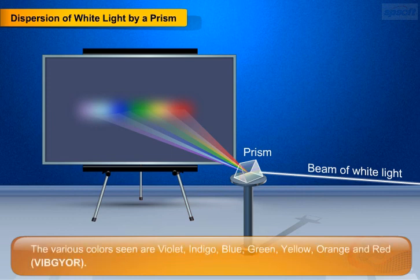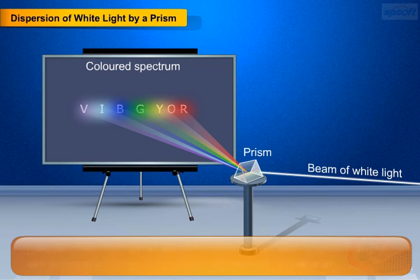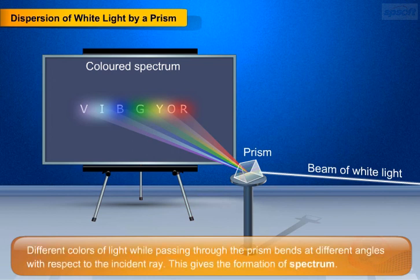The various colors seen are violet, indigo, blue, green, yellow, orange, and red — VIBGYOR. The splitting of the light ray occurs because of the angles of bending for each color. Different colors of light, when passing through the prism, bend at different angles with respect to the incident ray. This gives a formation of spectrum.